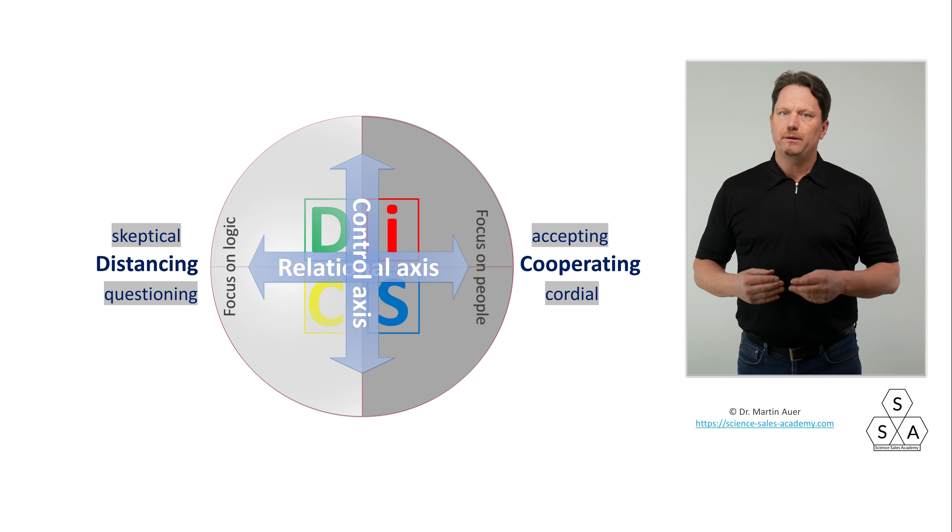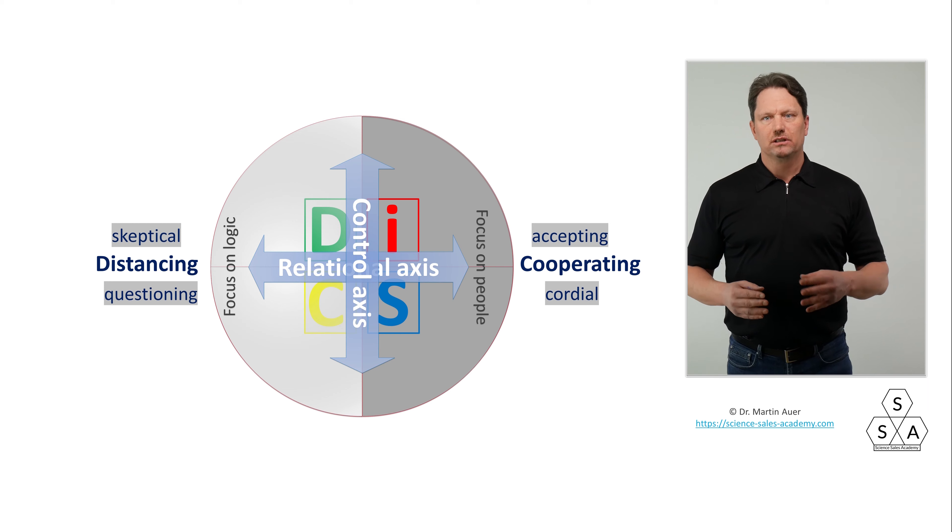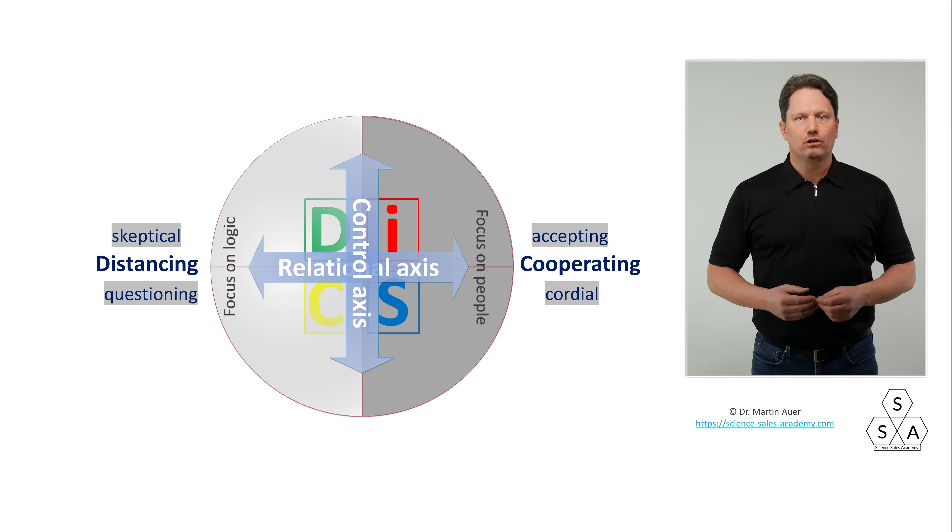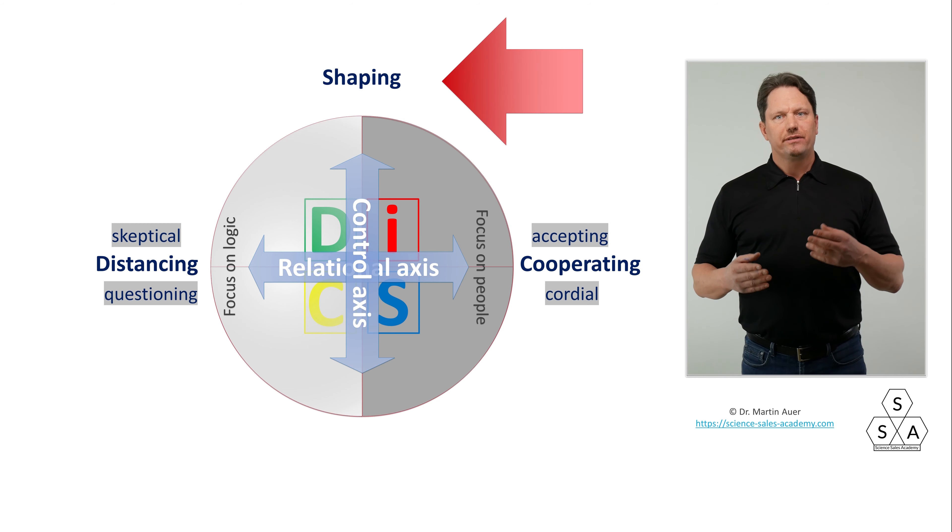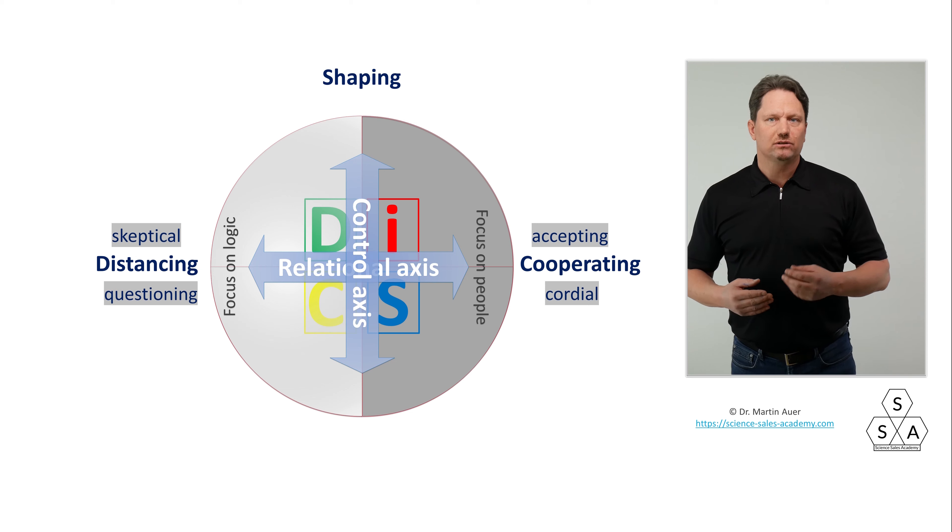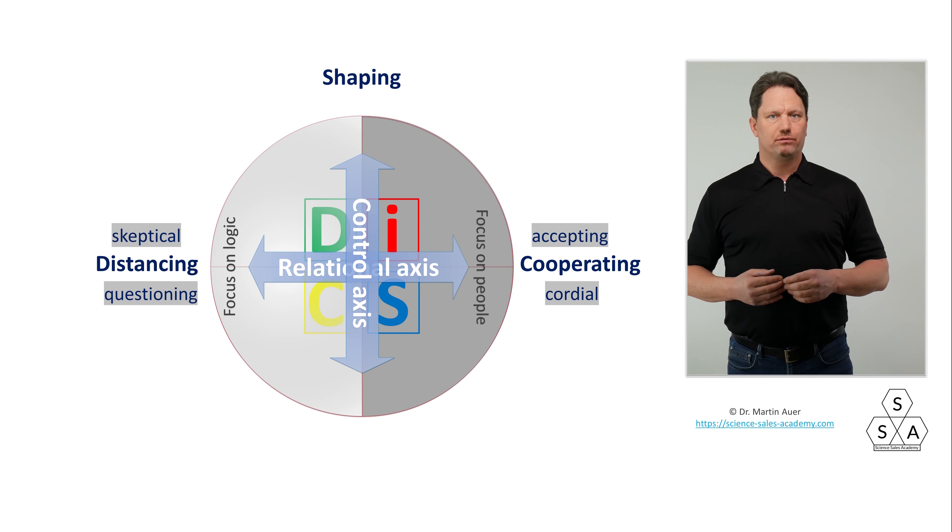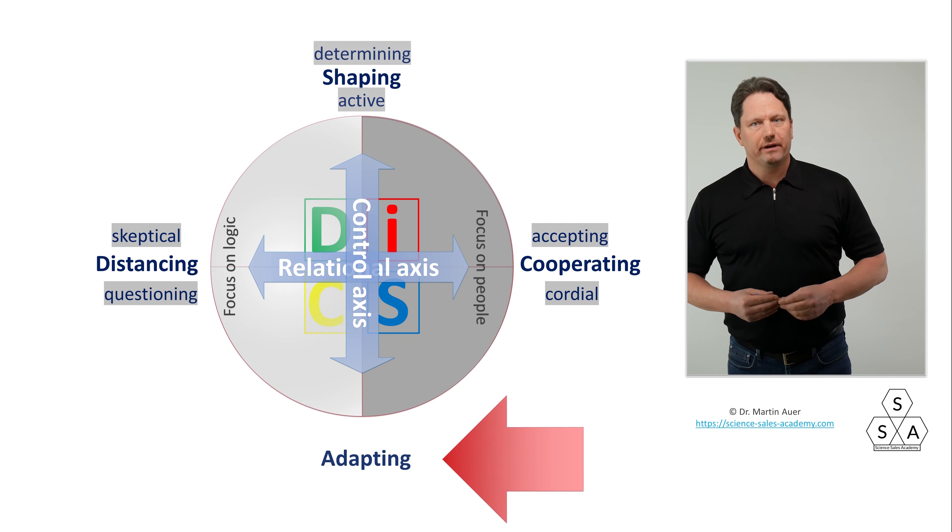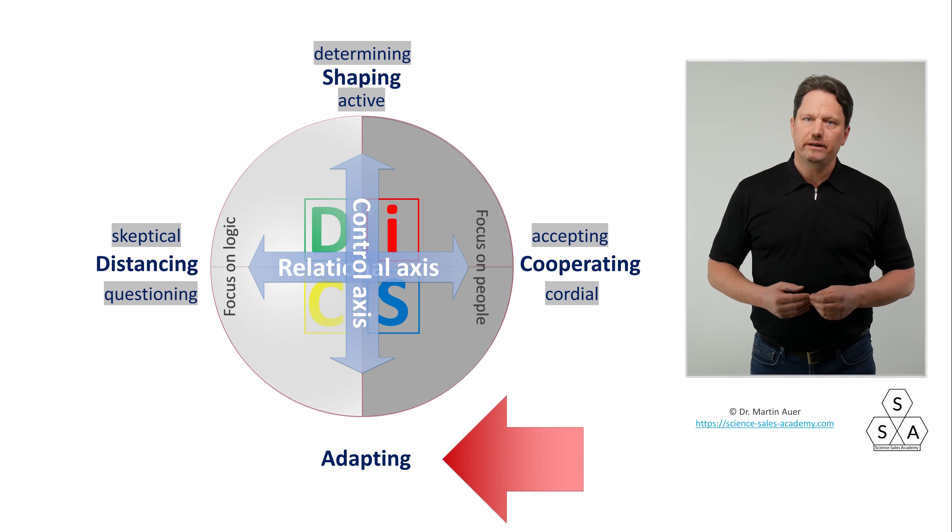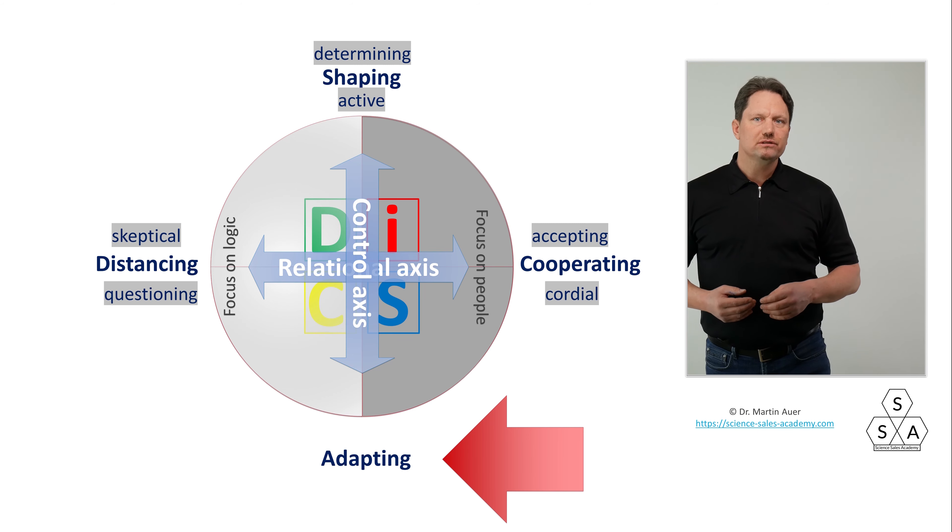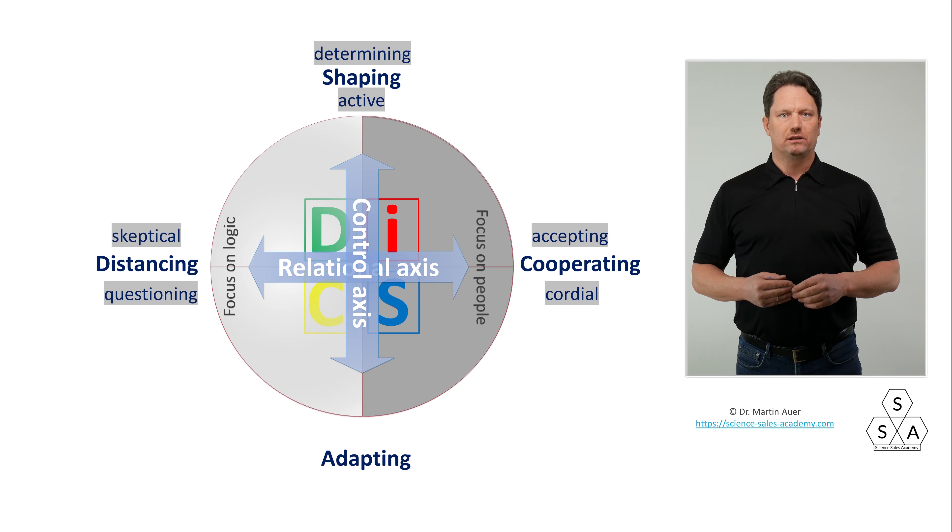Now let's get to the vertical axis, the control axis or shaping or creation axis. Personally, I like the term shaping axis better, because that's exactly what it's all about, shaping and creating. At the 12 o'clock position of this vertical shaping axis, there is a strong desire to shape one's environment, to be master of one's environment and situation, to create one's own structure in which one lives and works. In the extreme, we could say, be the structure oneself. You could also say here, I am my own structure. I am not dependent on anything or anyone.